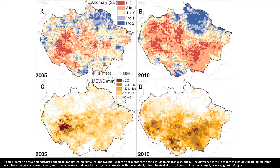We can use satellite data to validate whether the changes in the model are performing as we have observed in the recent past. So by using satellite data to validate our models in the past, this gives us a lot better confidence in our models for the future.